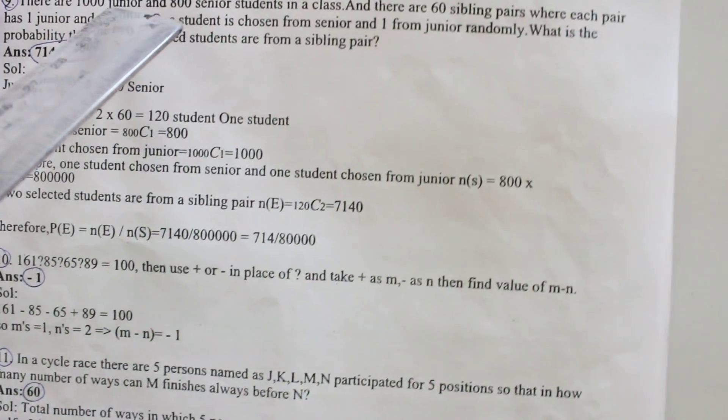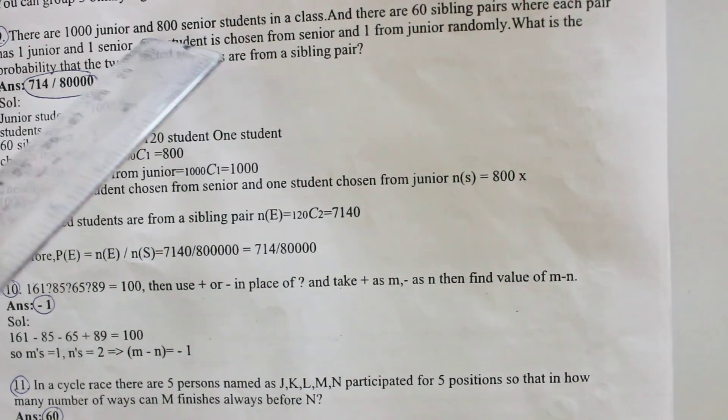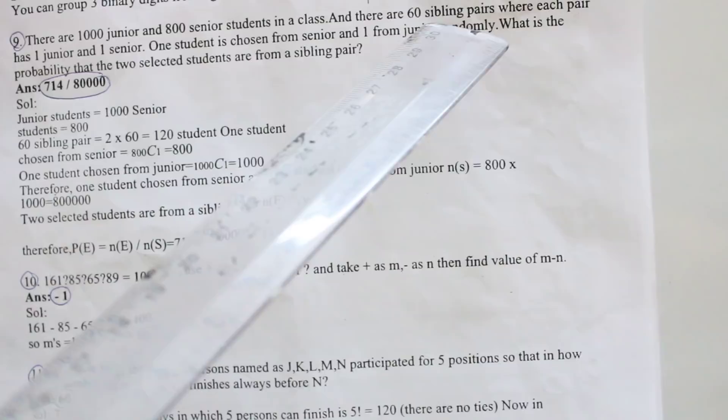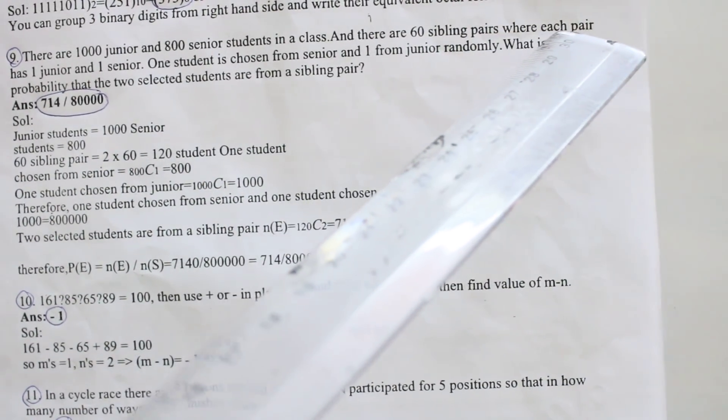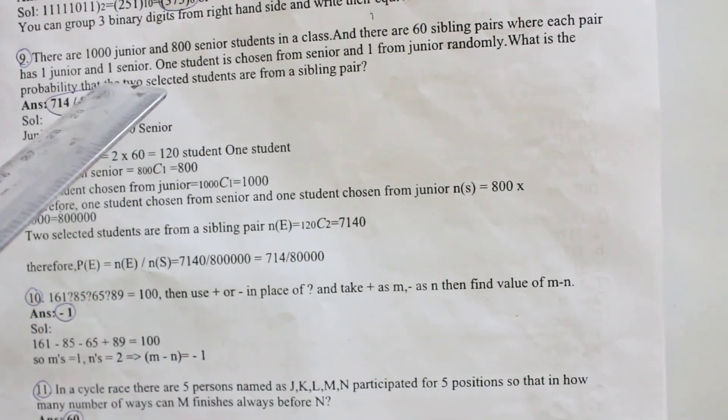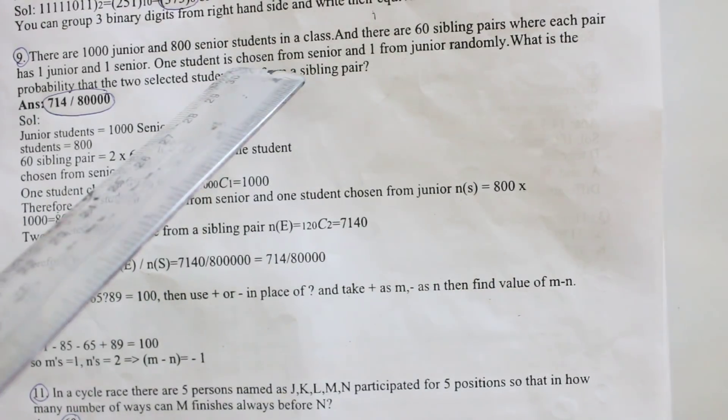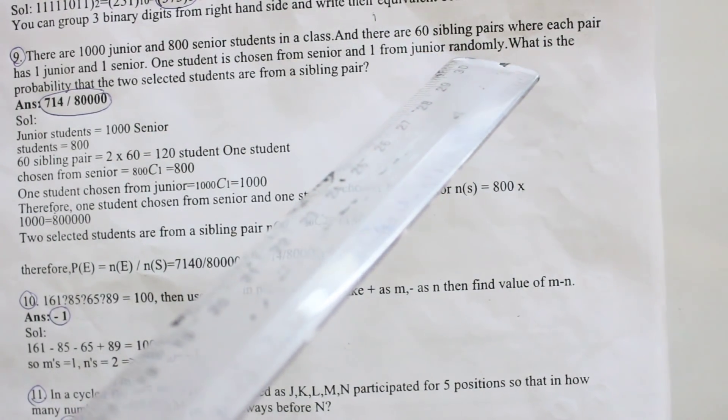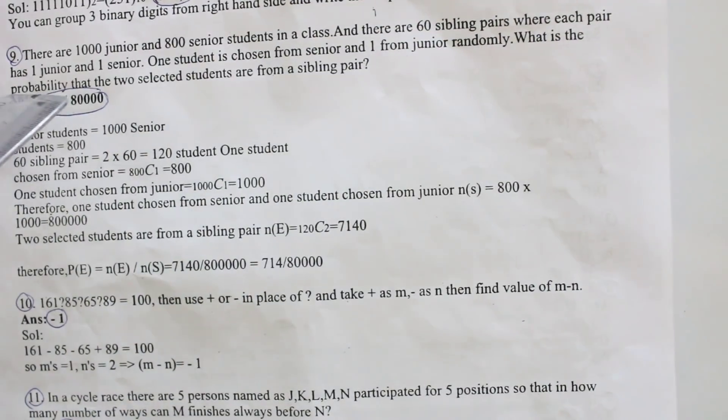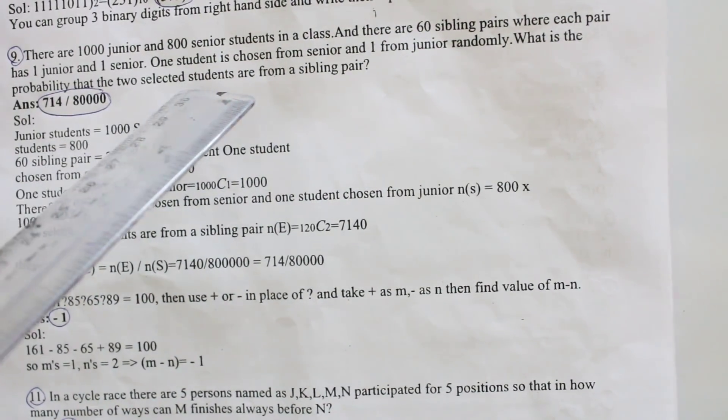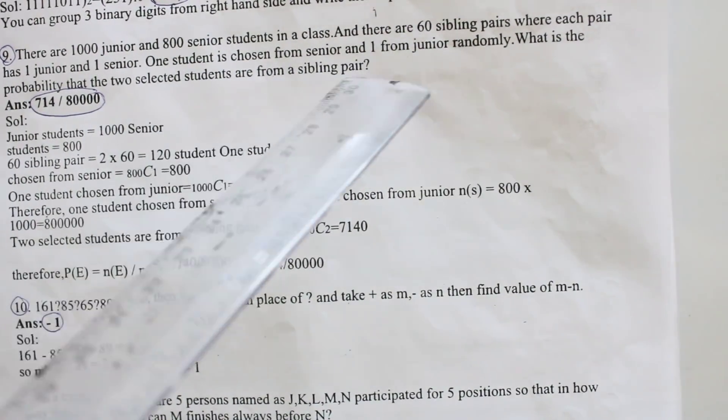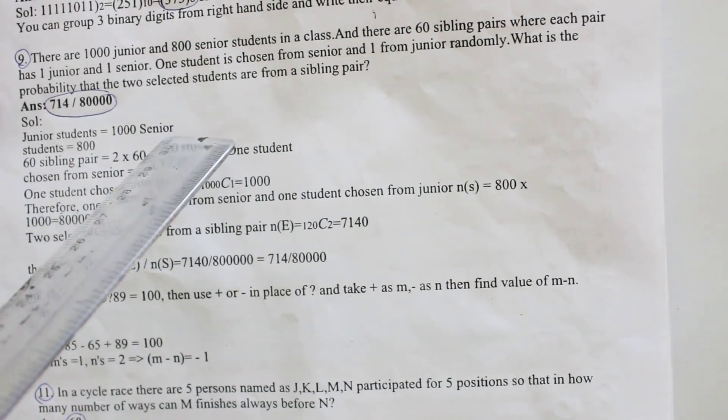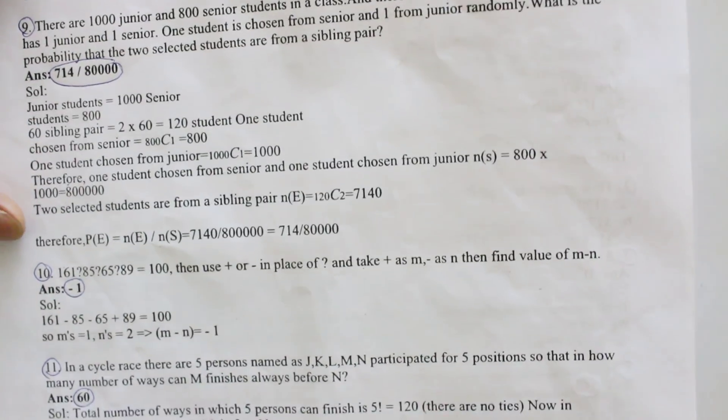Ninth one: There are 1000 junior and 800 senior students in your class and there are 60 sibling pairs where each pair has one junior and one senior. One student is chosen from the senior and one from the junior randomly. What is the probability that the two selected students are from the sibling pair? Your answer is 7, 14 by 80,000.